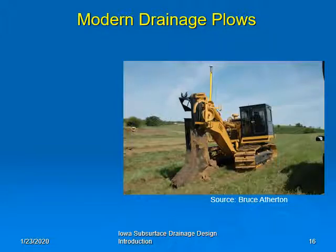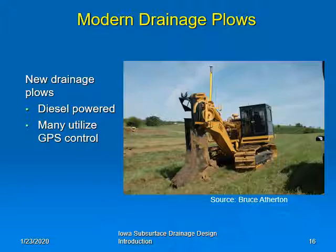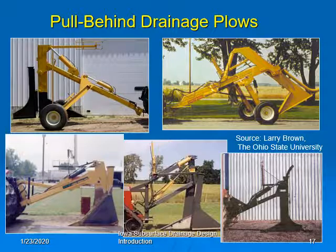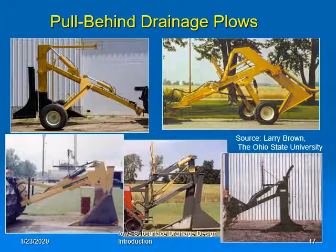Modern drainage plows are obviously diesel powered and many of them use GPS control. More recently, smaller drainage plows have been developed for use with large agricultural tractors. However, not all of these machines are capable of installing drain pipe to NRCS specifications. At least one of these machines does not have a means of cutting a groove in the bottom of the trench to properly support the pipe.